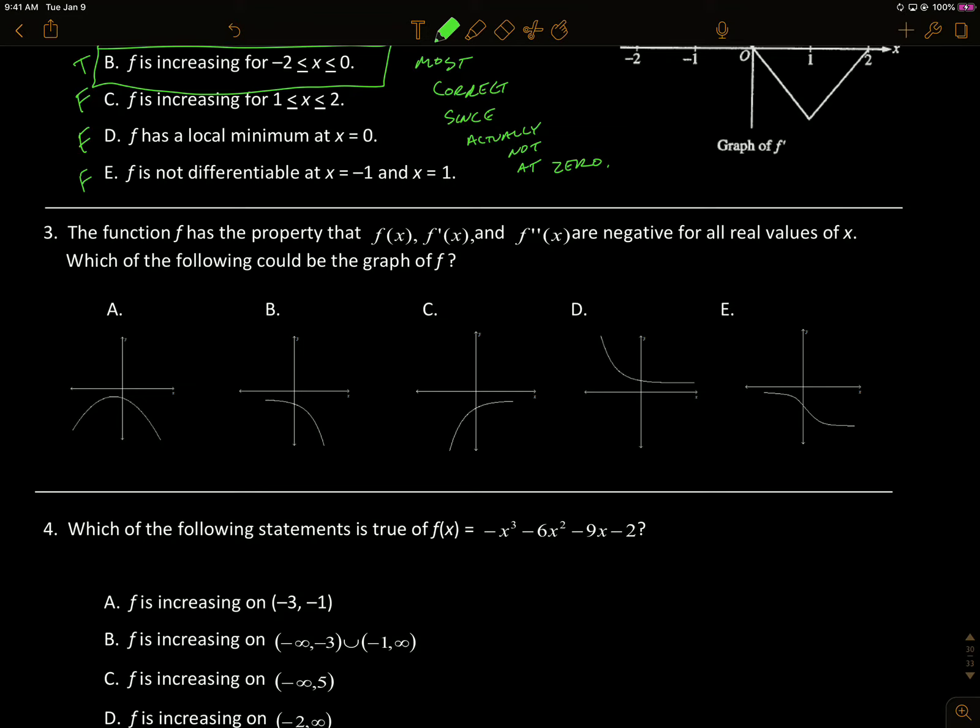Multiple choice, the function f has the property that f, f prime, and f double prime are all negative for all x's. Which of the following could be the graph?